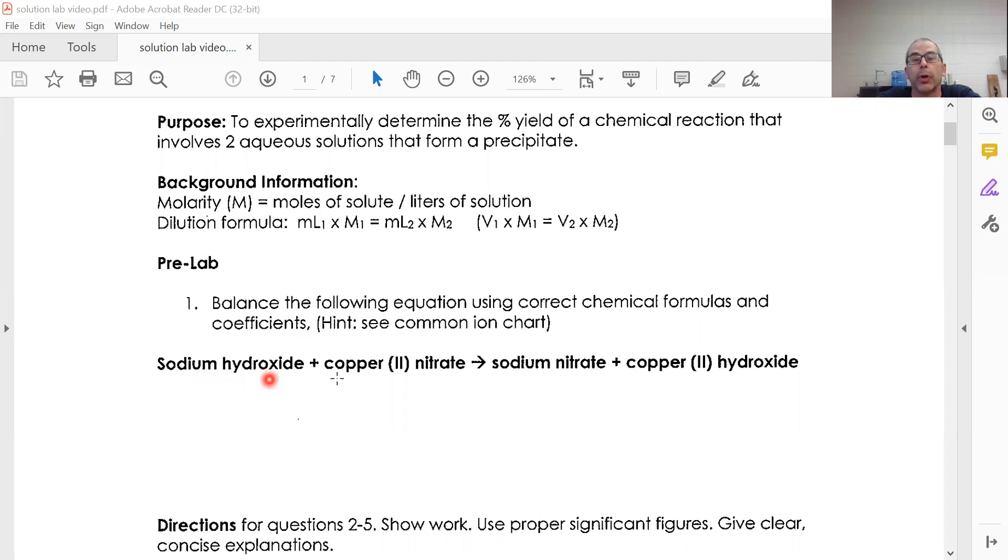Sodium hydroxide plus copper 2 nitrate forms sodium nitrate plus copper 2 hydroxide. I'm not going to say much about that, but you're going to have to go to your common ion table and look up the charge of sodium, look up the charge of hydroxide, and say, oh, Na, what's the charge? It's Na plus.